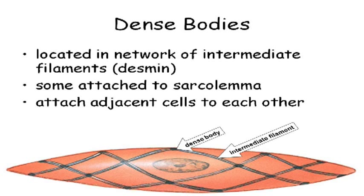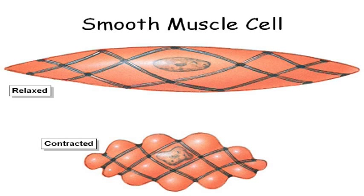When a smooth muscle cell contracts, it doesn't just contract in one direction like a skeletal muscle cell — it actually squishes in all three dimensions. It's just like pulling a net or net stockings tightly — it squishes together from all directions.